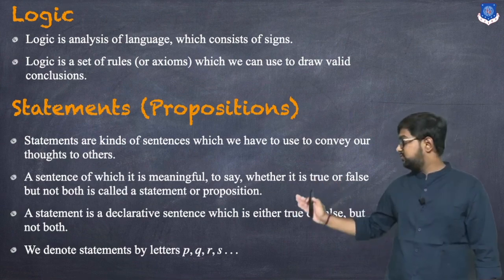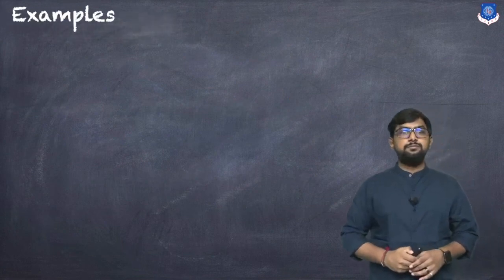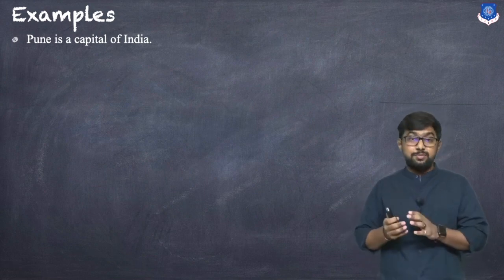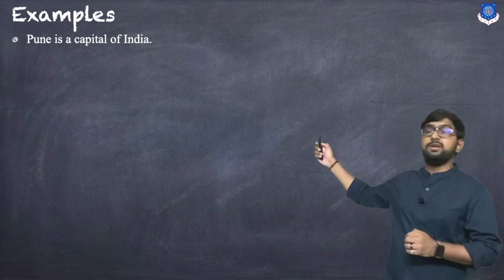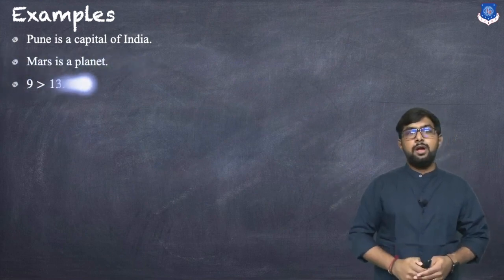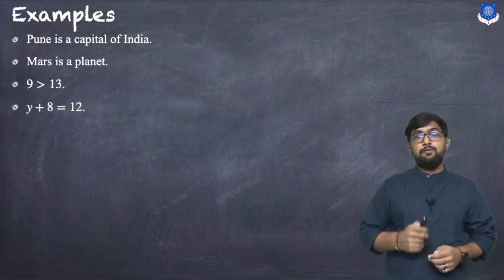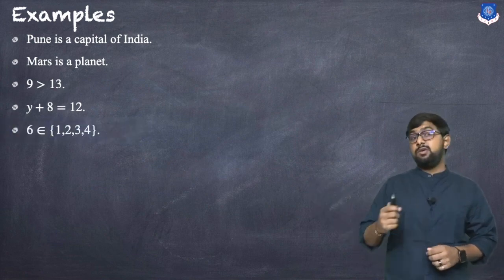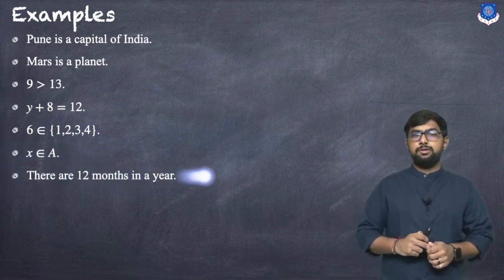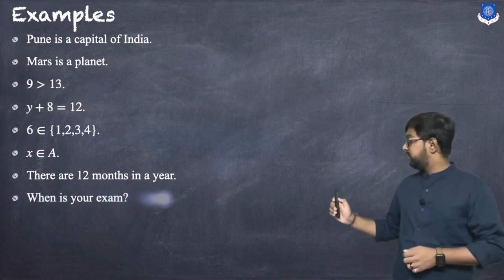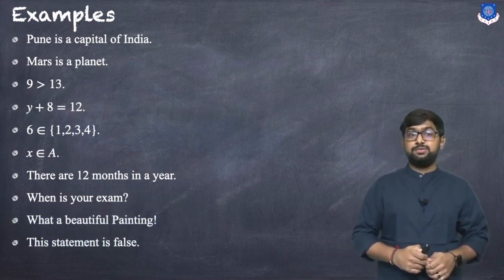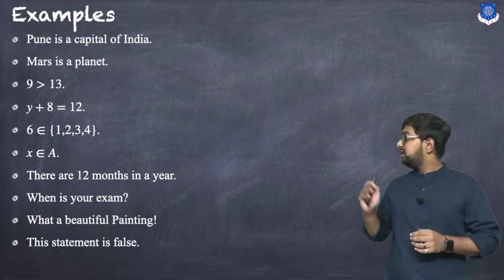Let us take some examples. We will list all the examples and check whether each is a statement and whether it is true or not. The first one: Pune is the capital of India. Second: Mars is a planet. Third: 9 is greater than 13. Fourth: y + 8 = 12. Fifth: 6 belongs to {1, 2, 3, 4}. Sixth: x belongs to A. Seventh: there are 12 months in a year. Eighth: when is your exam? Ninth: what a beautiful painting! And last: this statement is false.